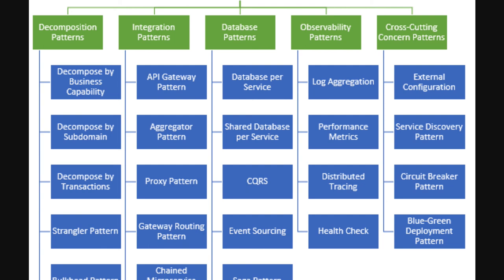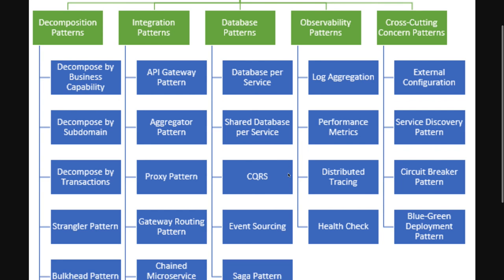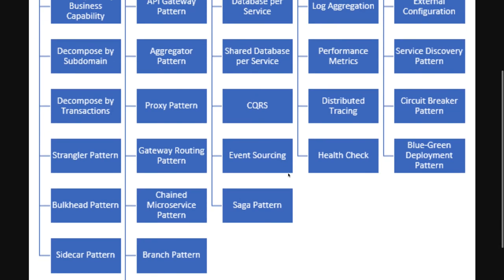CQRS — Command Query Responsibility Segregation — is another popular pattern, often used with event sourcing. Once you implement a database per service, querying data that requires joining across multiple services becomes difficult. CQRS suggests splitting the application into two parts: the command side handles create, update, and delete requests, while the query side handles queries using a materialized view.